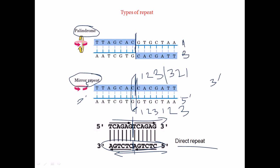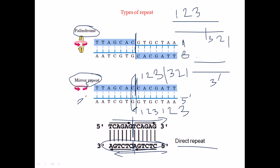We consider strand A with sequence TTAGCAC, but we put the mirror on strand B. From that position on strand B, we find CACGATT. So we have one-two-three, and we put the mirror not in this strand but in the opposite strand, giving us three-two-one from there. In mirror repeats, one-two-three with the mirror on the same strand gives three-two-one — that is the key difference between palindromic sequences and mirror repeats.